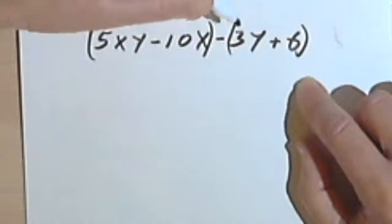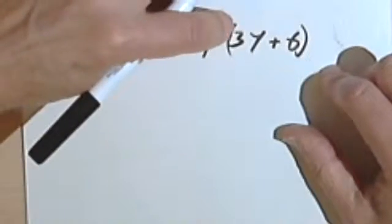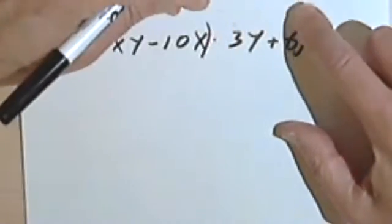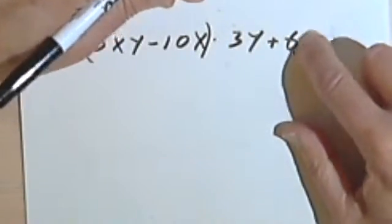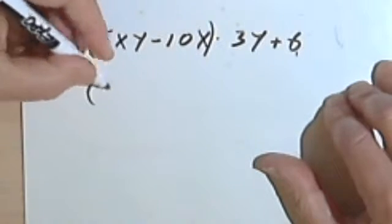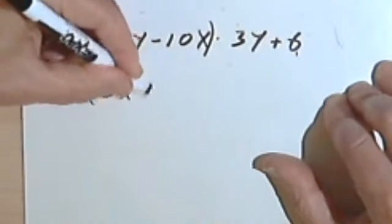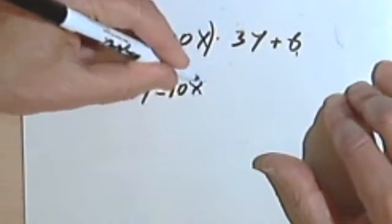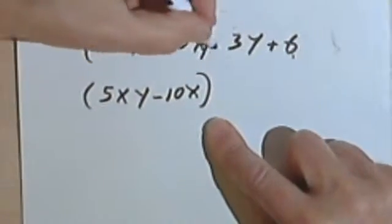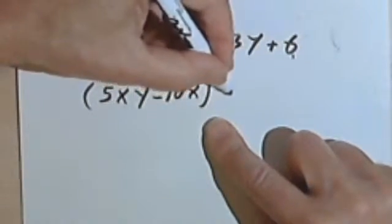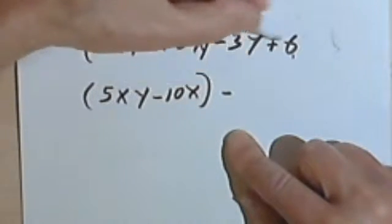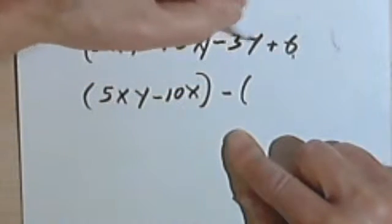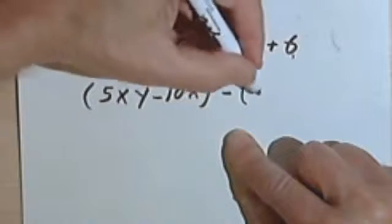So what I can do is do this in two steps, maybe, just so I don't get myself confused. Write the 5xy minus 10x, put the parentheses around it, write my negative sign, and then when I rewrite this, remember to change the positive 6 to negative 6.